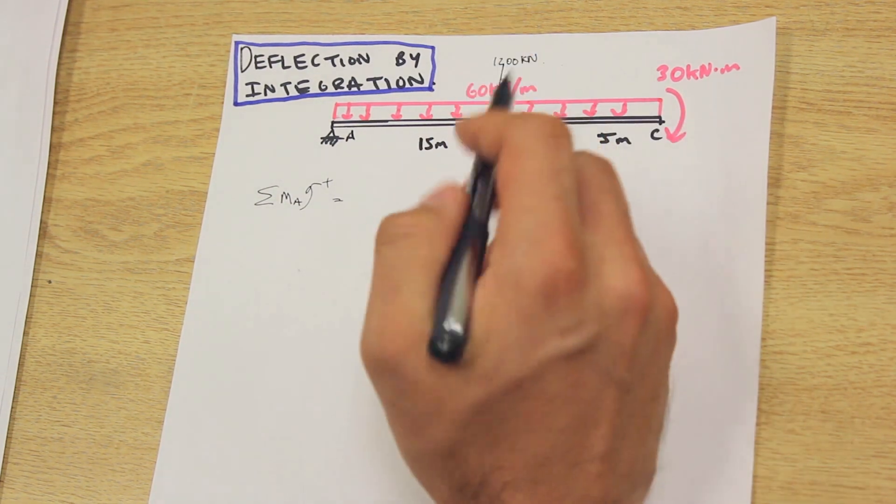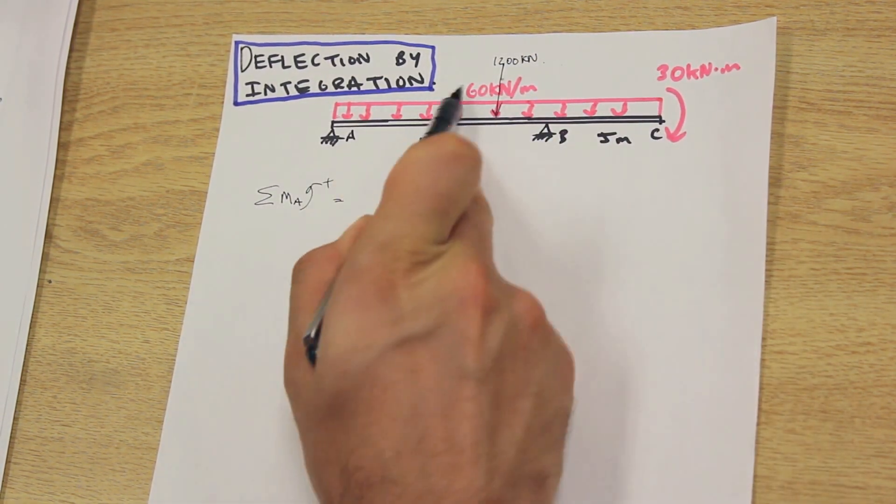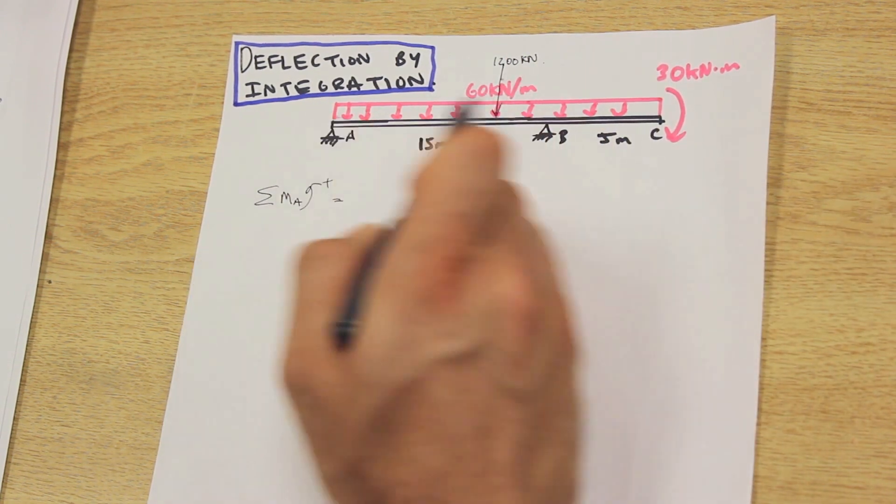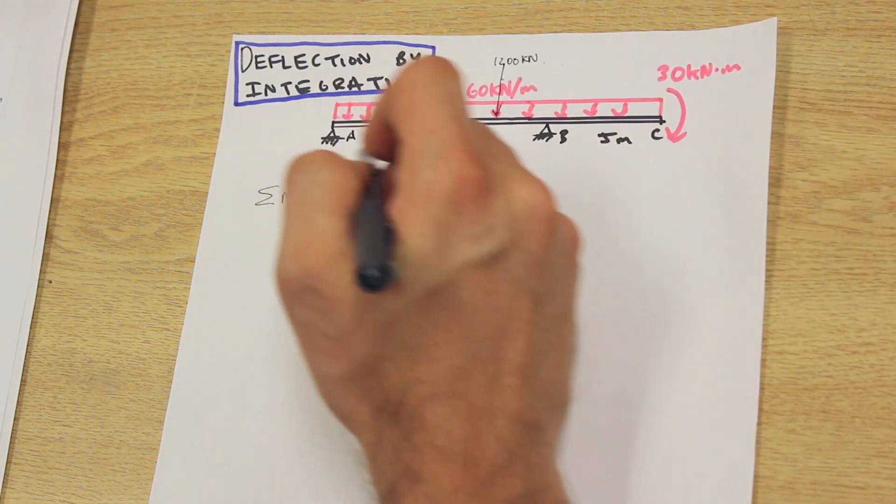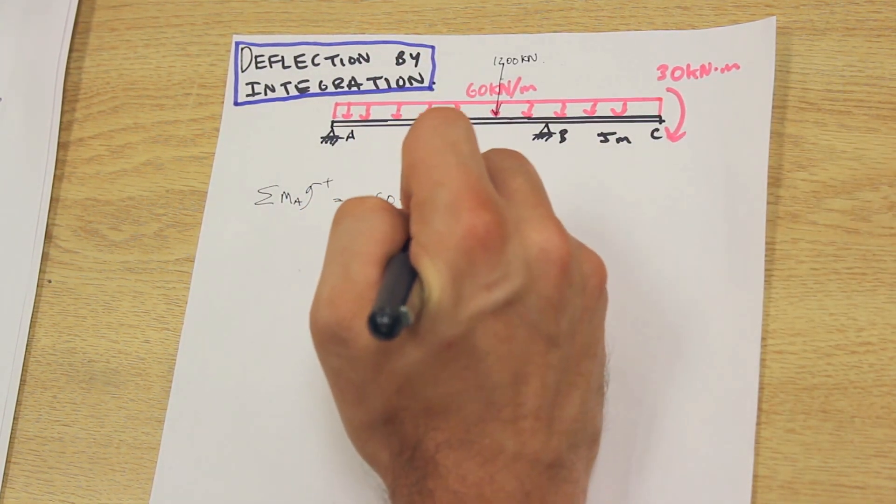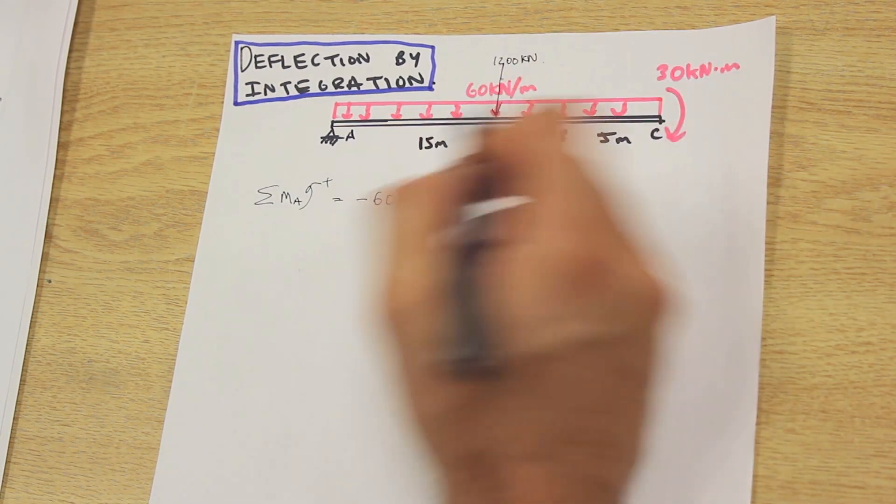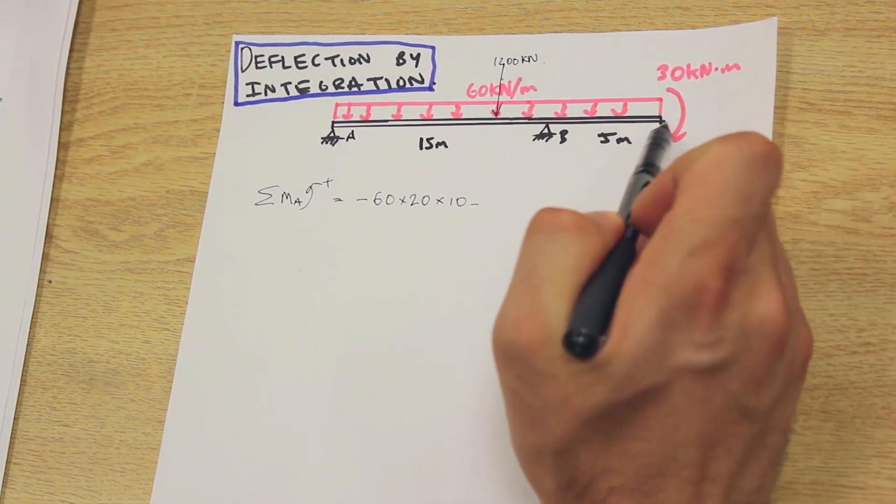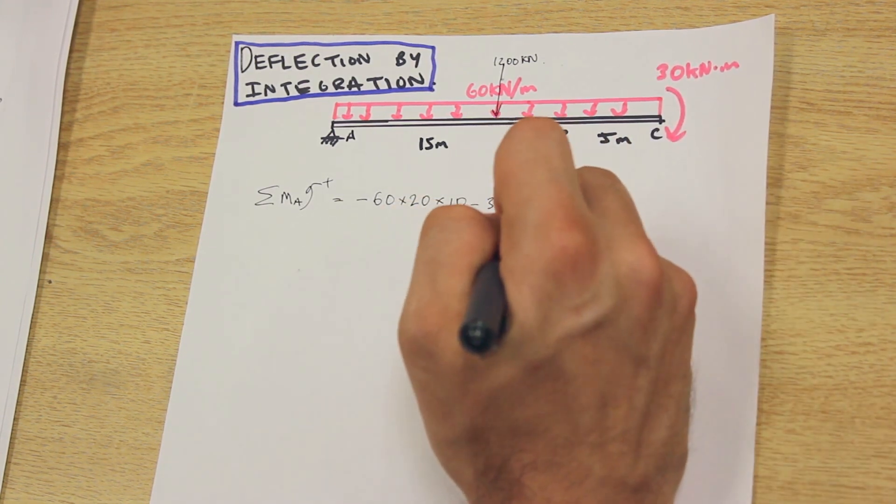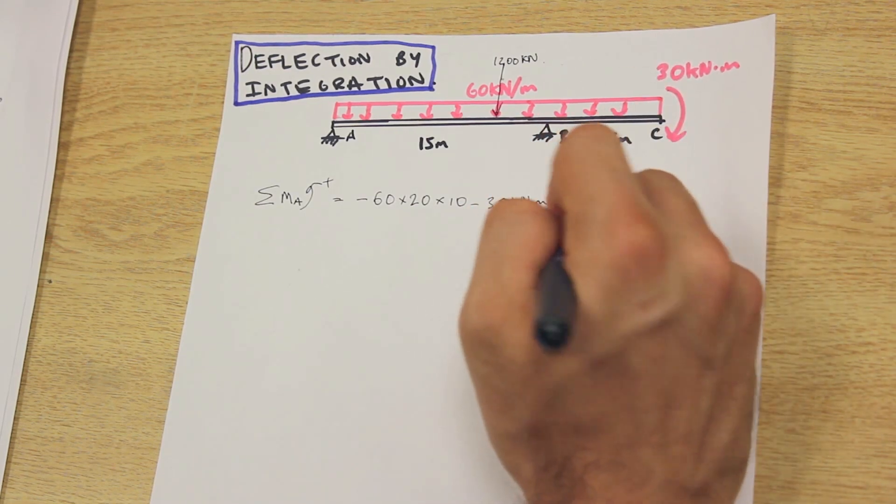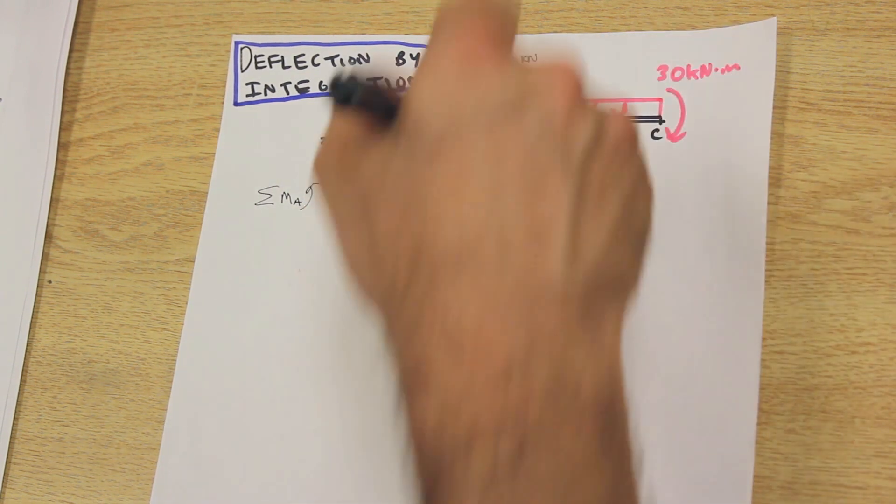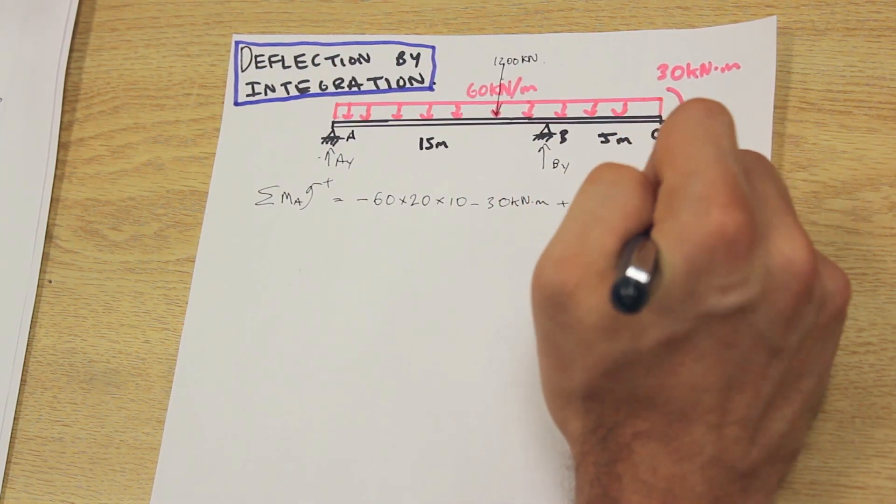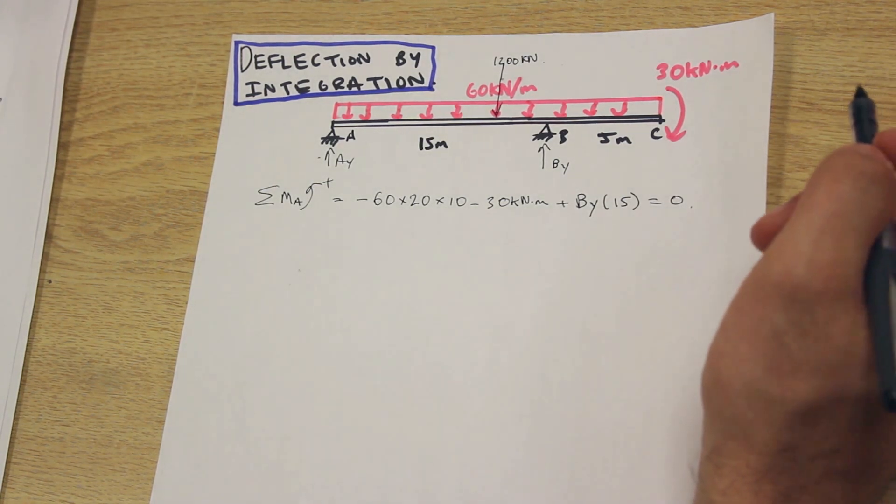Resolving this distributed load: 60 times 20 gives us 1200 kilonewtons, and that's going to act at the center of the beam, which is 10 meters from each side. We have that force which is negative, so I'll write it out the long way: -1200 times the distance, which is 10. Next we have this free moment here at the end of the beam, point C. Finally, we have this reaction here at B, which is 15 meters, acting in the positive direction. That's all equal to zero—summation of moments equals zero.